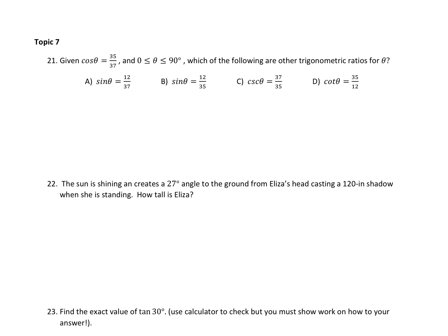When I see cosine of theta, I think about a right triangle. I'm going to put theta in one of the angles that's not the right angle. Cosine — thinking through SOH-CAH-TOA — cosine is the adjacent side over the hypotenuse.